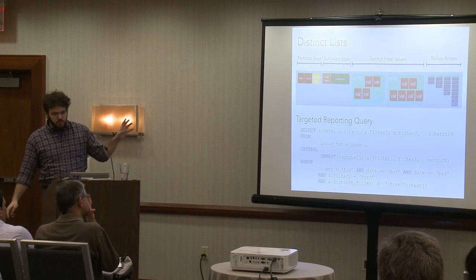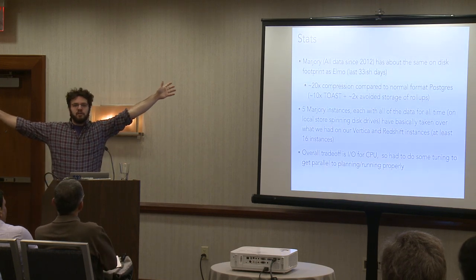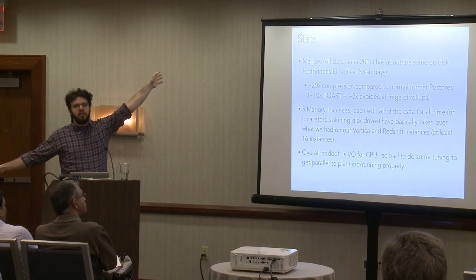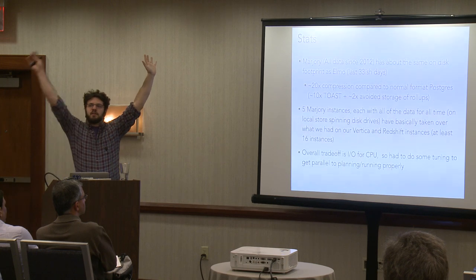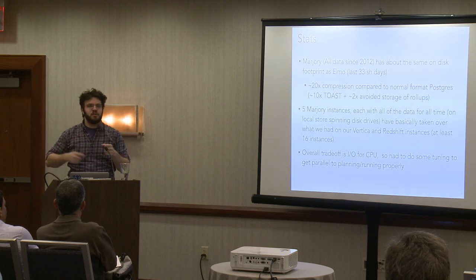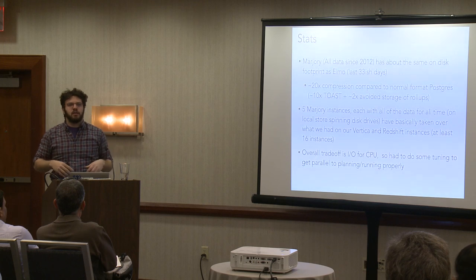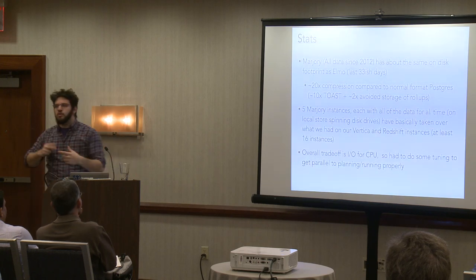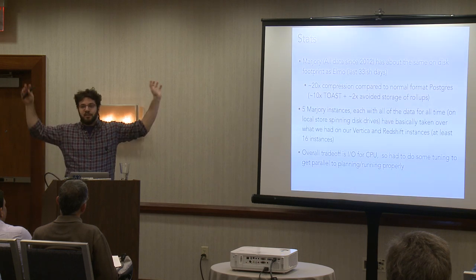We now are fitting all of our data from 2012 onto single instances that take about 18-20 terabytes, which is about the same size as a month of data we still have in a normal Postgres instance for recent queries. We have five Marjorie instances and they are functionally independent. During ETL, one of them loads and does all the grouping for a client-date combo, then copies out the internal representation back to S3, and then the other Marjorie instances pull that down and load it instead of doing all the computations themselves, which speeds up our load pretty nicely. It's a lot cheaper than what we were doing before with all the Redshift/Vertica stuff.